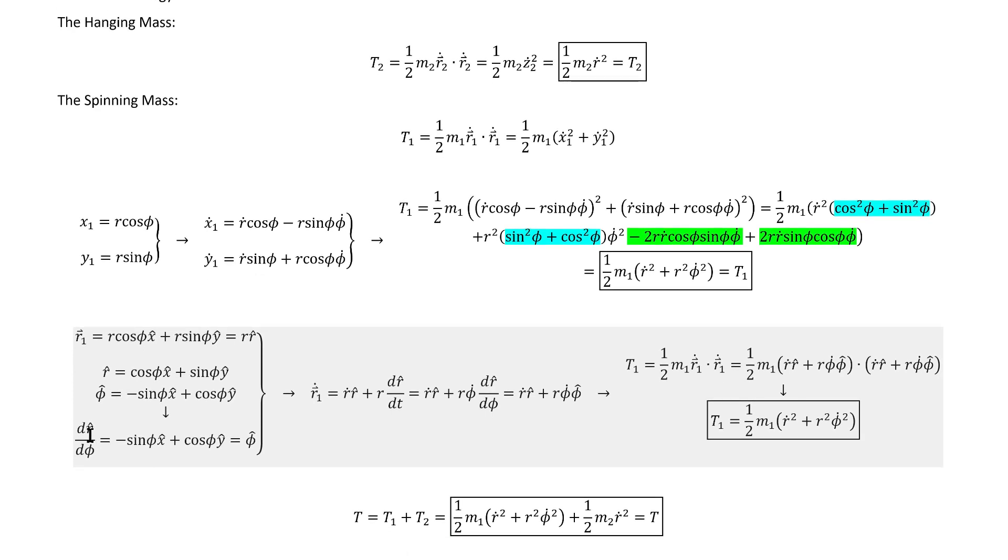Using that, we can calculate the derivative of R hat with respect to phi, and we find that it's equal to phi hat. And that's useful because then we can apply the product and chain rule to R1 vector to give us this expression, which we can then insert directly into T1, and we get the same result.